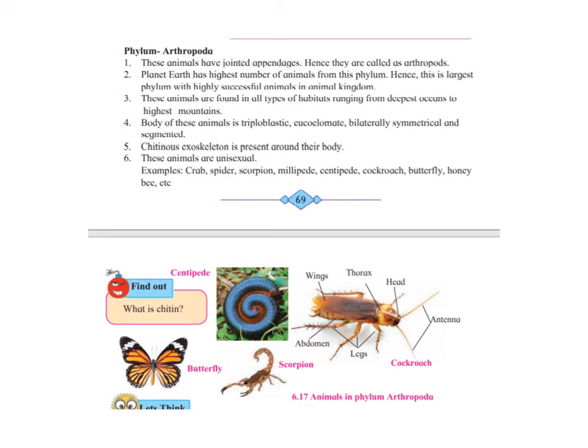Phylum Arthropoda — animals belonging to this phylum have joint appendages, meaning jointed limbs, feet, or legs. That's why they are called arthropods. Planet Earth has the highest number of animals from this phylum. Examples range from cockroach to butterfly to honeybee to crab to lobster — a huge variety. Hence this is the largest phylum with highly successful animals in the animal kingdom.